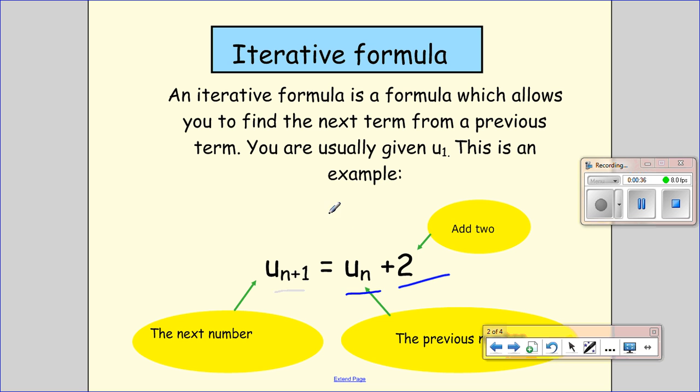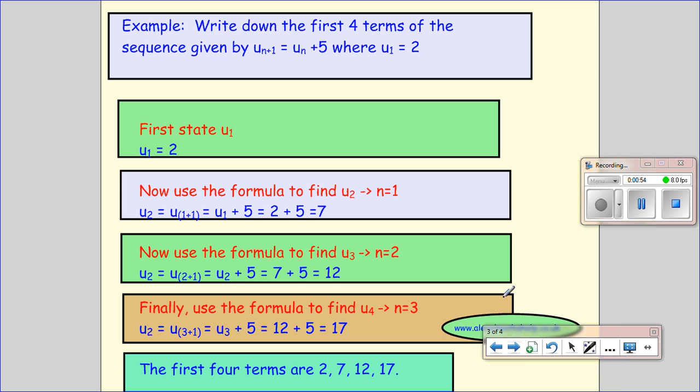So if the first term was 3, the second term, this would be n+1, so n is 2. I'd take the first term, n equals 1, and add 2 to it. So if the first term was 3, the second term would be 5.